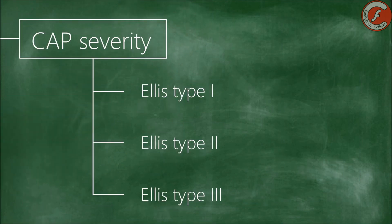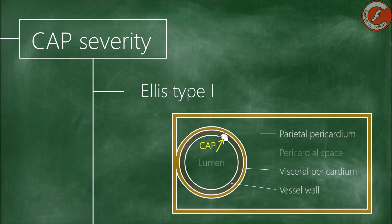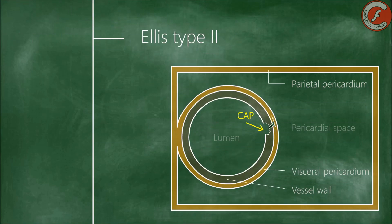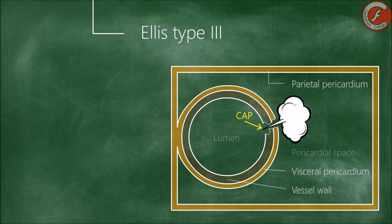Regarding the severity of the perforation, these complications can be classified into three types according to the Ellis classification. Type 1 perforations present an extraluminal crater without extravasation of contrast. Type 2 have myocardial or pericardial blush with an exit hole of less than 1 mm, and Type 3 have frank extravasation of contrast into another cavity through an exit hole greater than 1 mm in diameter.